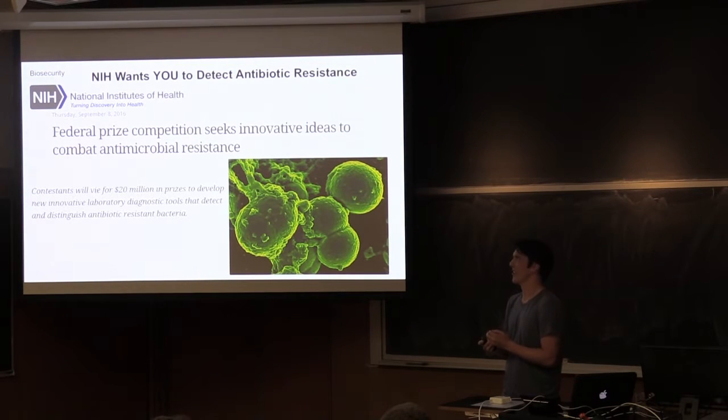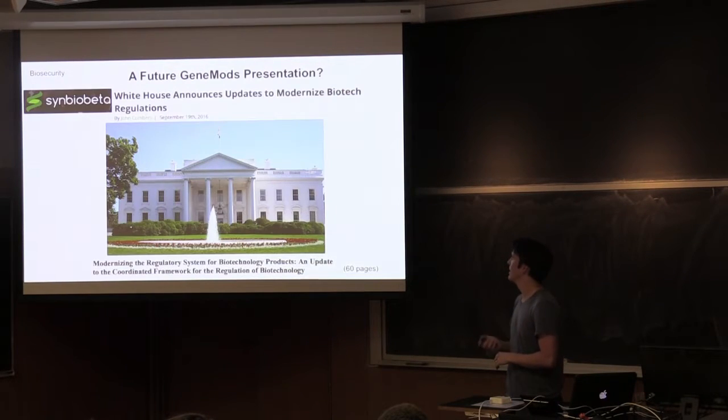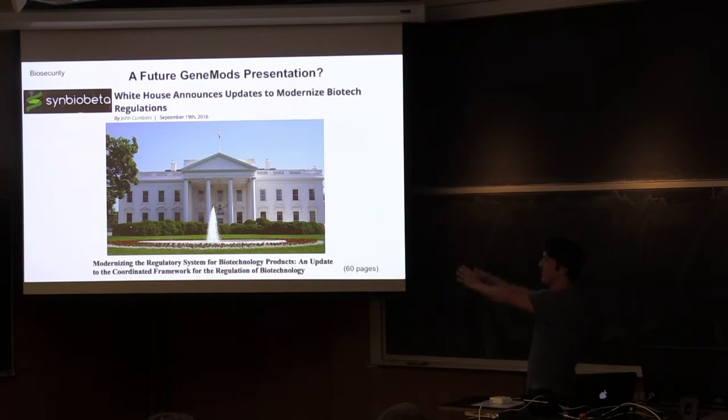The NIH is also interested in biosecurity. They announced a $20 million prize competition to develop rapid ways of detecting and distinguishing antibiotic-resistant bacteria. Figuring out, is someone infected with an antibiotic-resistant bacteria, and what antibiotics are they resistant to, in a quick enough way that you can immediately start treating them with the antibiotics that the bacteria aren't resistant to, or know whether or not the antibiotics would be useful, and then reduce general antibiotic use so that resistance spreads more slowly. And the White House has actually announced a major update to biotech regulations. This is the first major update to the framework of the way that biotech is regulated in our country since 1992. And so there are a lot of interesting things there. Cell-free biosynthesis is now part of the framework, and there's been some modifications to plant stuff. So this is a potential future DEMONS presentation for someone who's interested in going through the 60-page thing and then telling us all about it.